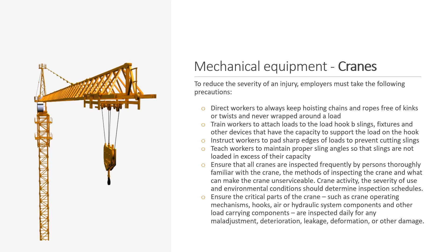Here are some further safety precautions. Direct workers to always keep hoisting chains and ropes free of kinks or twists, and never wrap them around a load. Train workers to attach loads to the load hook using slings, fixtures, and other devices that have the capacity to support the load on the hook. Instruct workers to pad sharp edges of loads to prevent cutting slings, and teach workers to maintain proper sling angles so that slings are not loaded in excess of their capacity.